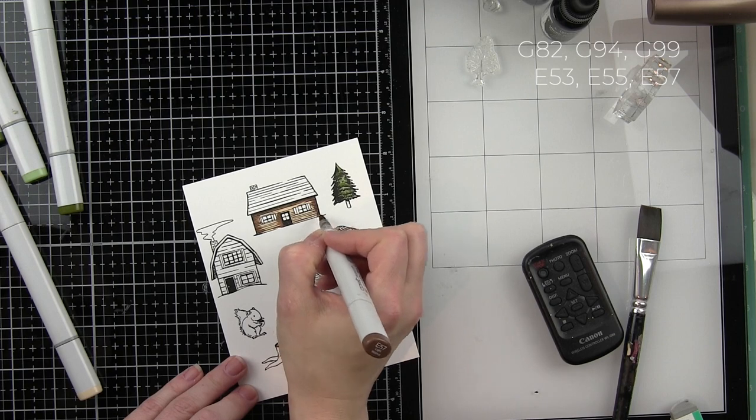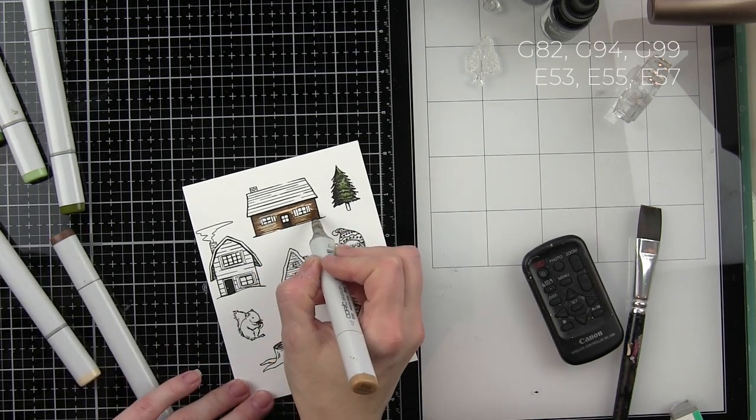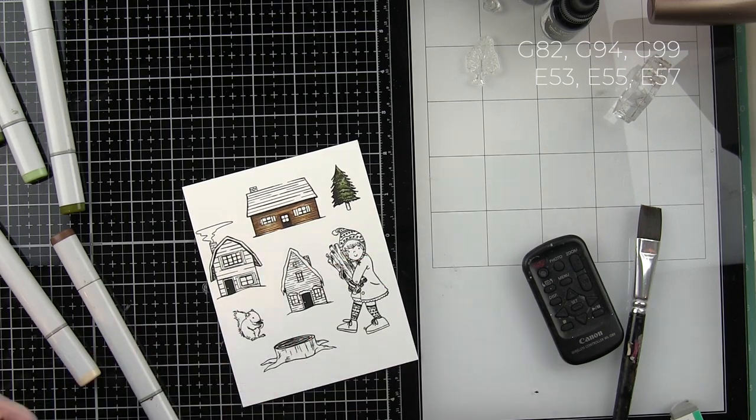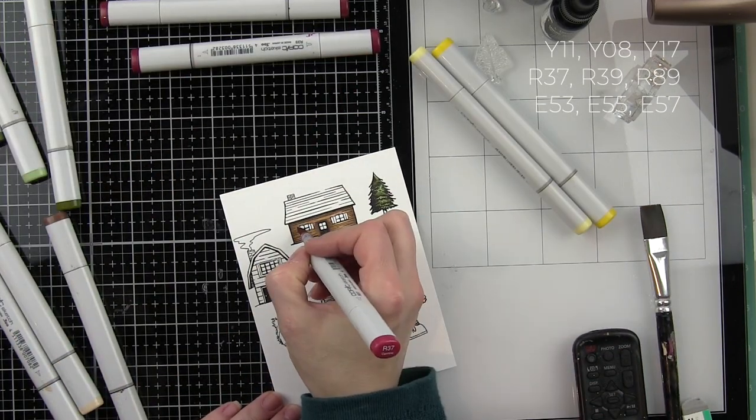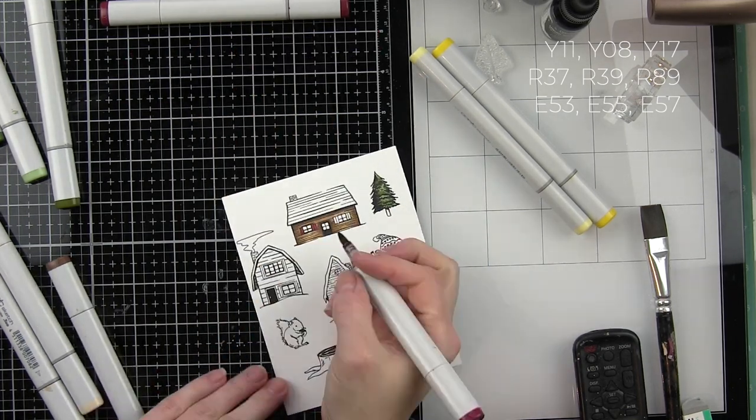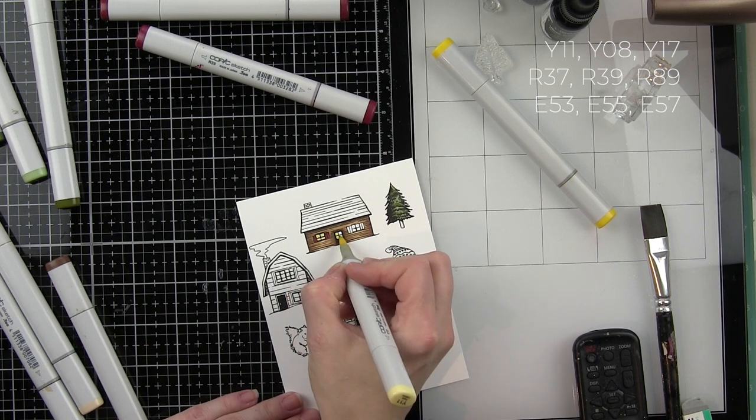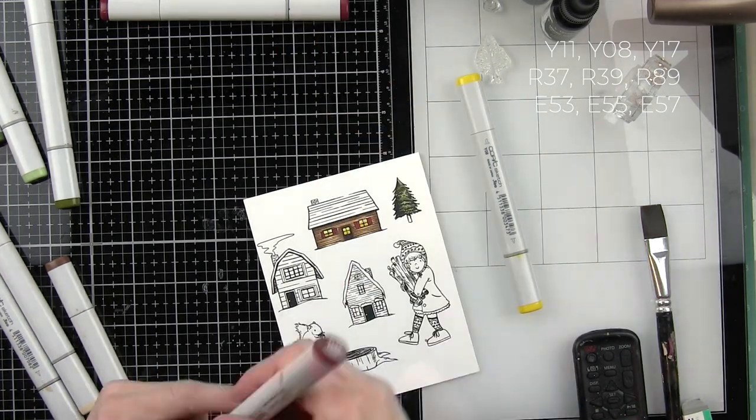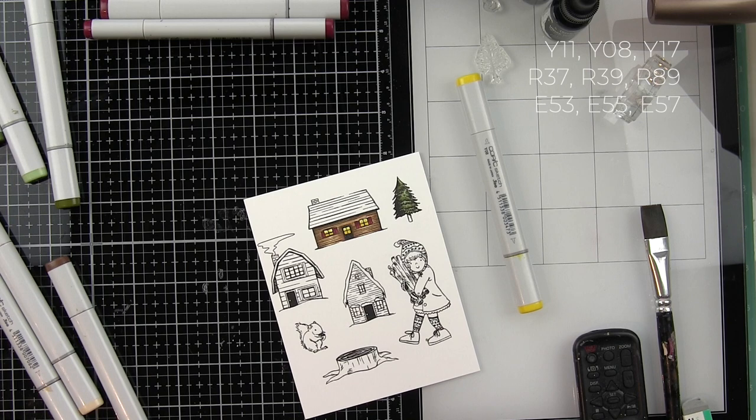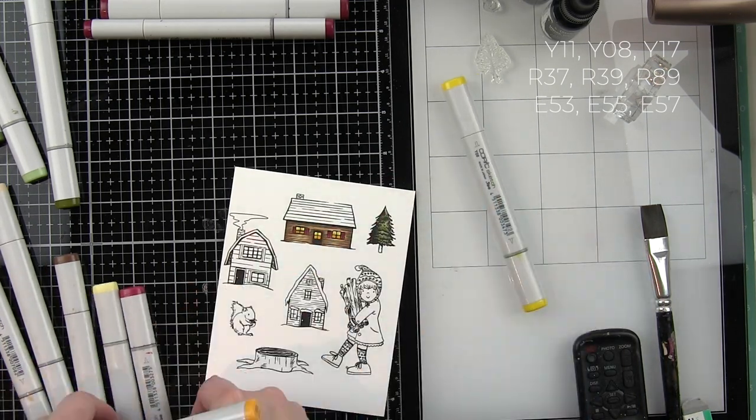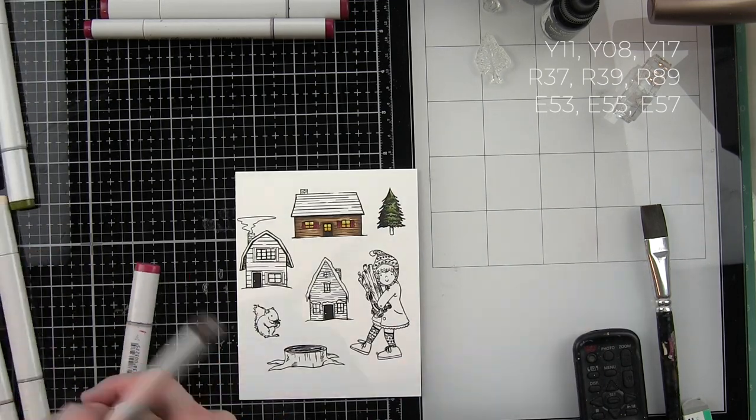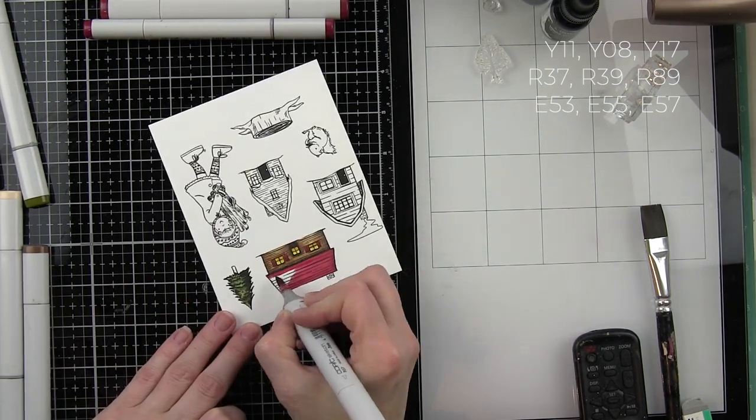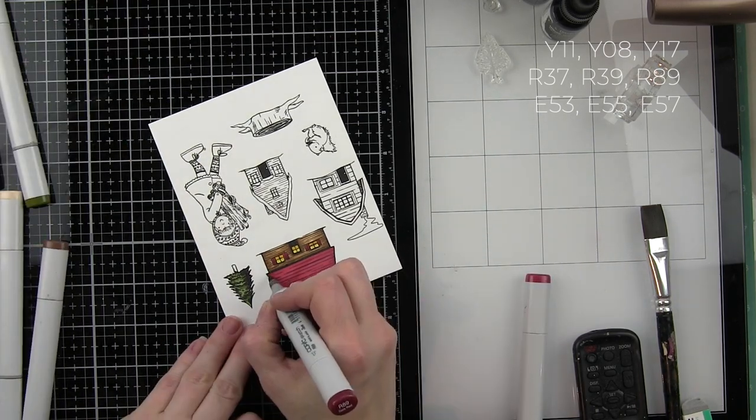The log cabins are all colored with shades of earth tones in E53, 55, and 57. The tree is colored in with G82, 94, and 99. I stuck to pretty traditional holiday colors for my girl's outfit and any accents that I'm adding to the buildings like the shutters so that this card works for holiday. I want it to appear that the lights are on in all of the homes so I'm adding some yellow to the windows in all of the houses. I'm using mainly Y11 and Y17. I did pull in a little Y08 in a couple of spots but I used it pretty minimal, mostly the very light Y11 and then the Y17 for darkening up that look.